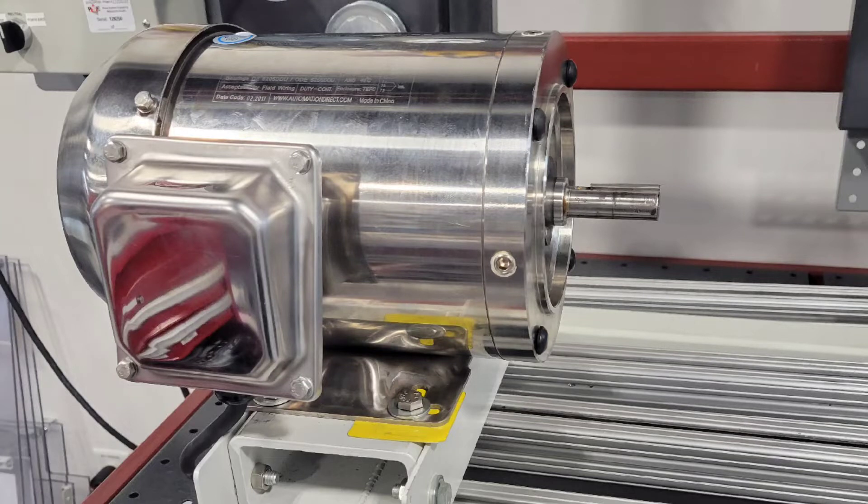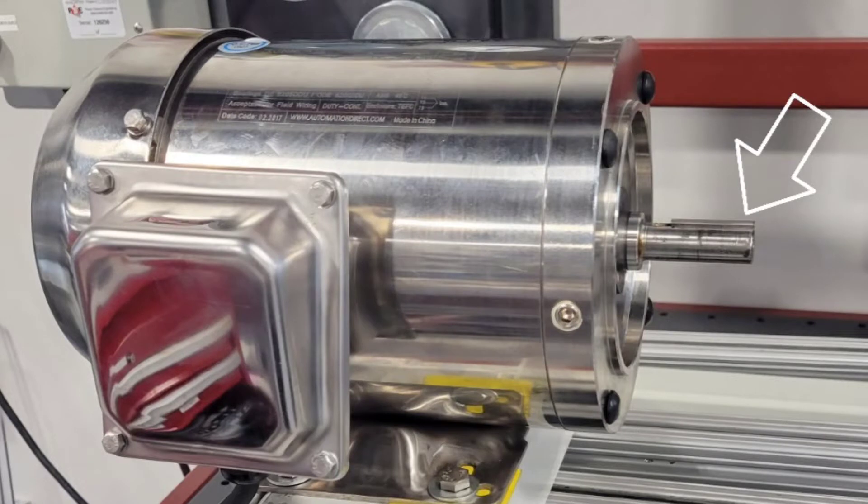The first part of the setup is getting the first flange coupling onto the shaft of the motor. As you see here, there's already a key in the motor which is going to be helpful for keeping the flange coupling in place.